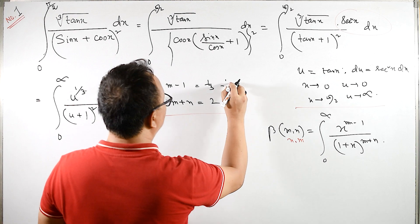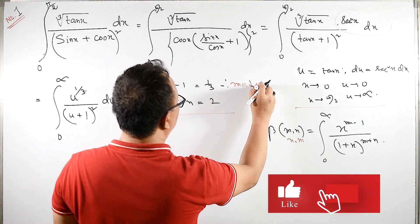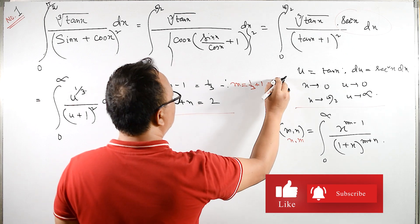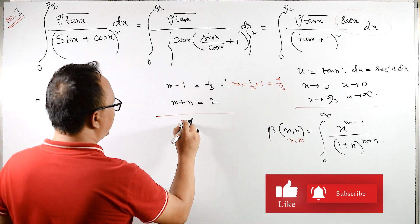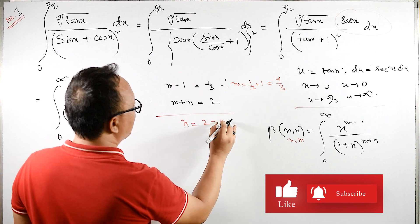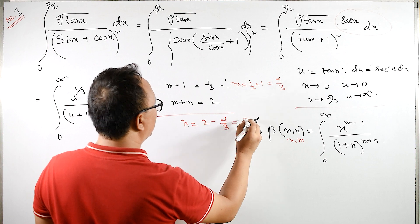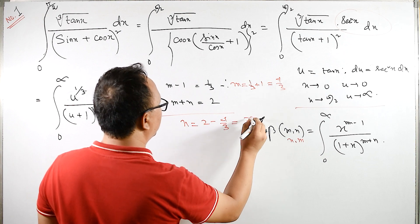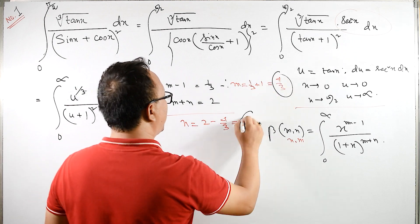From here we can find m equals to: m is 1 by 3 plus 1 is equals to, is equals to 4 by 3, we have m. So what is n? n equals to 2 minus m, m is 4 by 3 is equals to, it is 6, 6 minus 4 is 2, 2 upon 3. We have m as well as n.